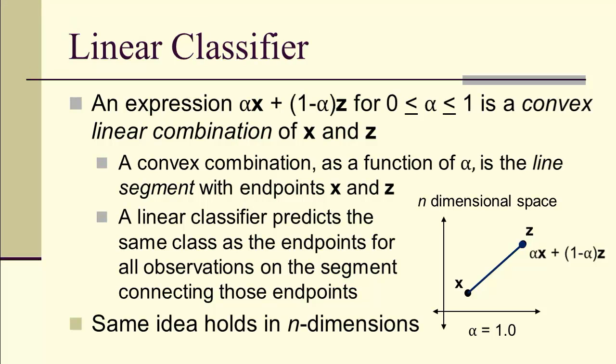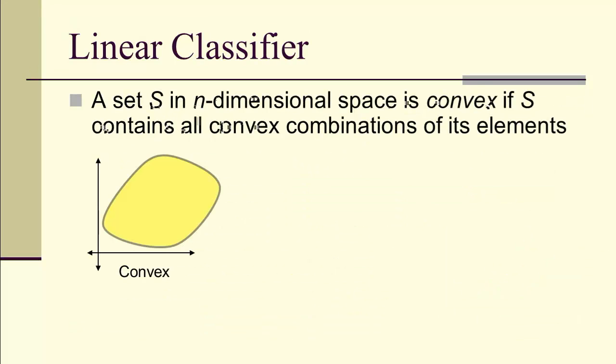The same idea holds in n-dimensional space. A set in n-dimensional space is convex if it contains all the convex combinations of its elements. In other words, if you draw any two points in the set, then the entire line segment between those two points is also in the set. Clearly we have a non-convex example when we have this inward dipping, because choosing x and z on either side means the line segment leaves the region and has to return before reaching z.